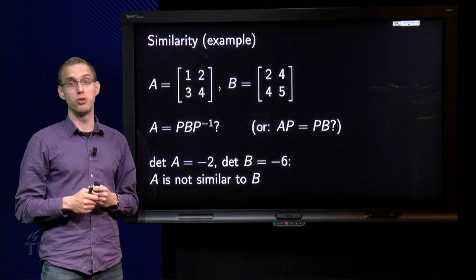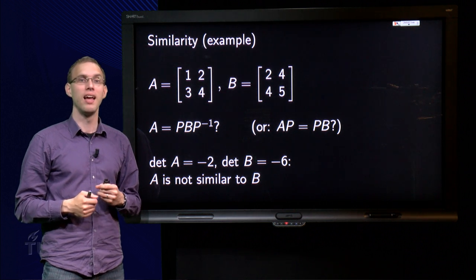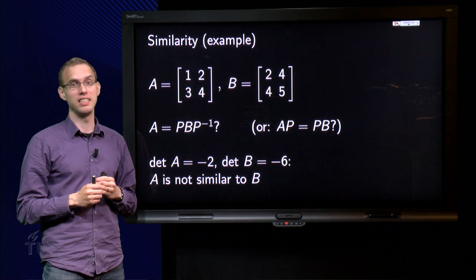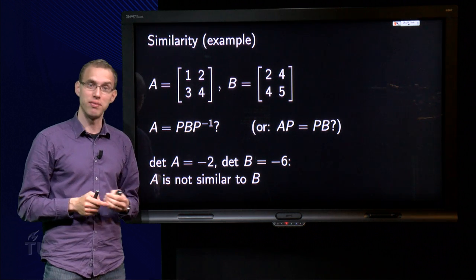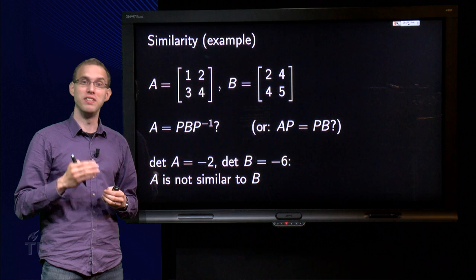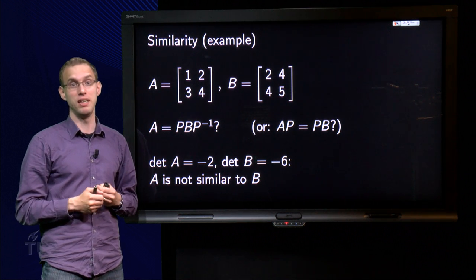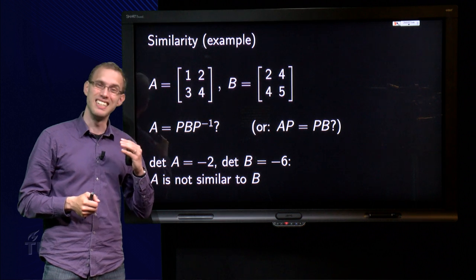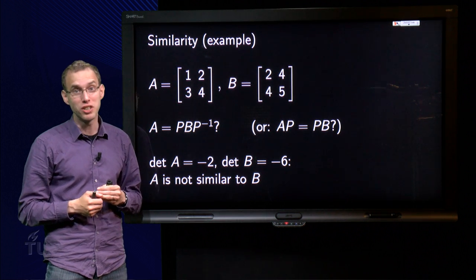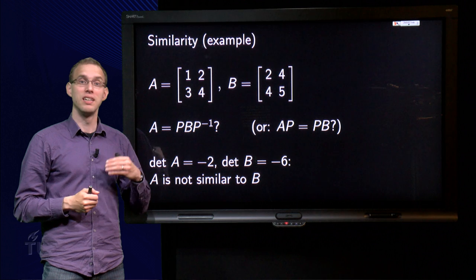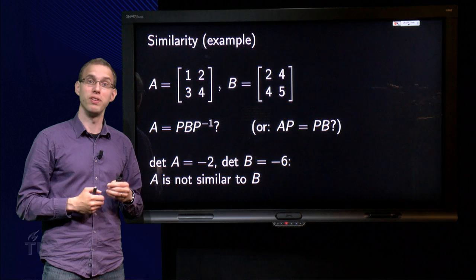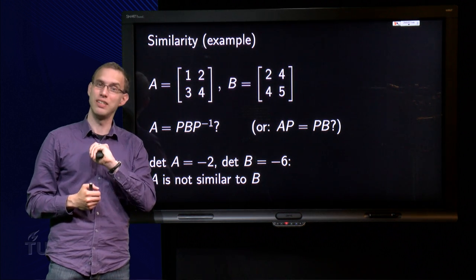How can we determine whether two matrices are similar? As we will see in this video, this may be easy in some cases. Similar matrices have the same determinant, so if det A is not equal to det B, we know that A is not similar to B. This is however a necessary, but not a sufficient condition. So if det A equals det B, it will take some effort to figure out whether A and B are similar. But we can do it, as we will see in this video.